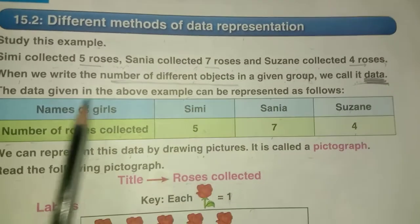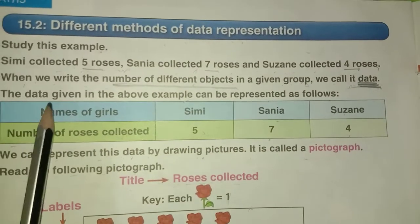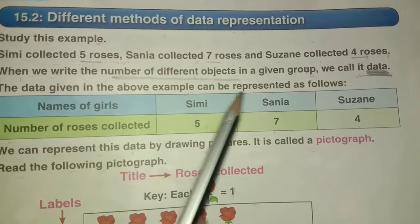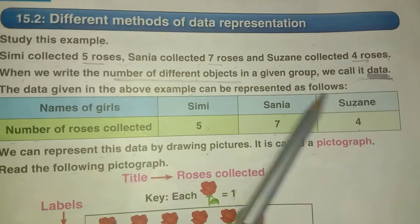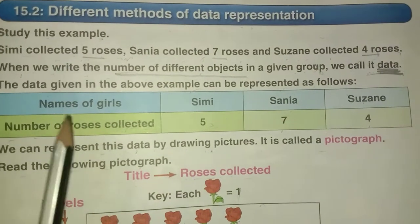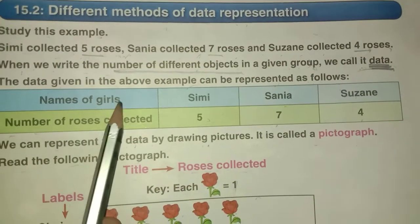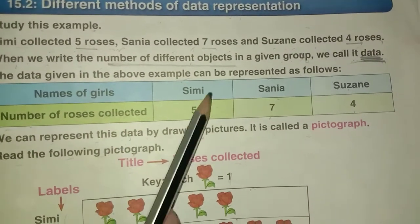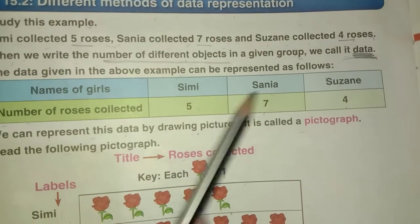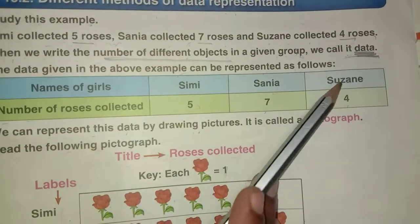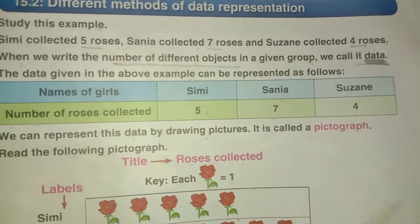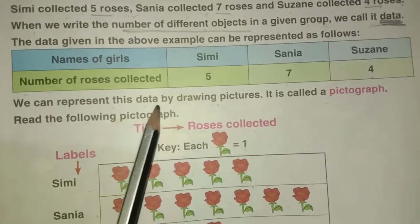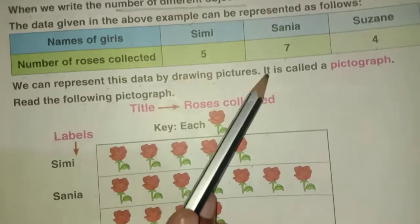The data given in the above example can be represented as follows — a table showing the names of girls and the number of roses collected: Simi collected five, Sanya seven, Suzanne four.